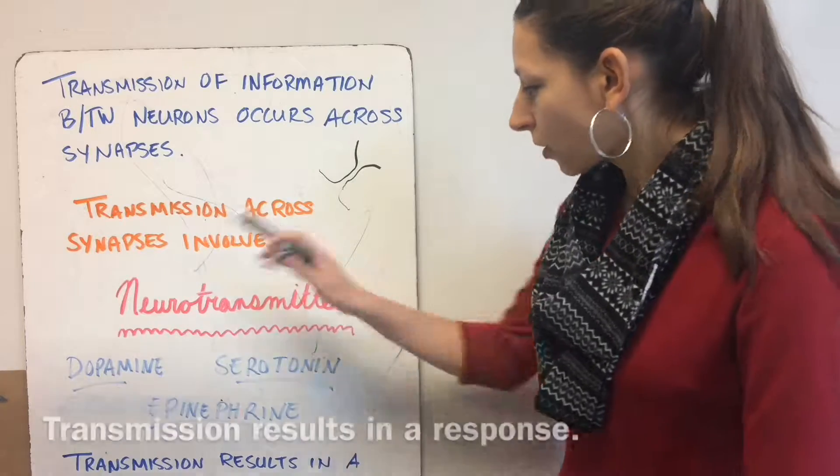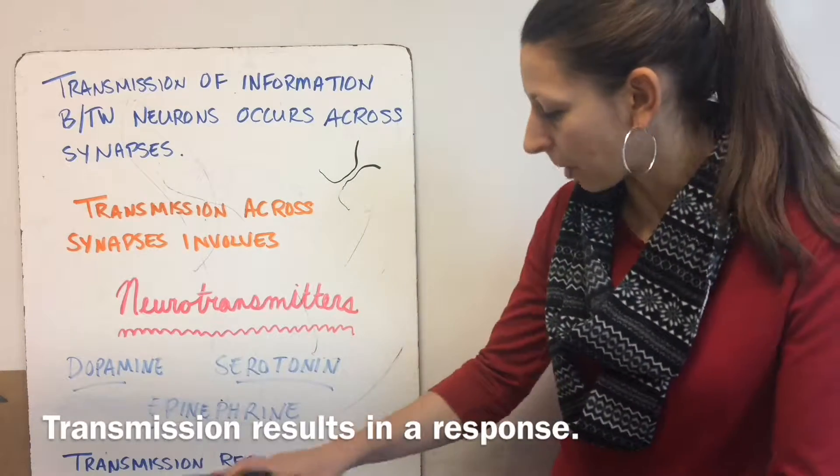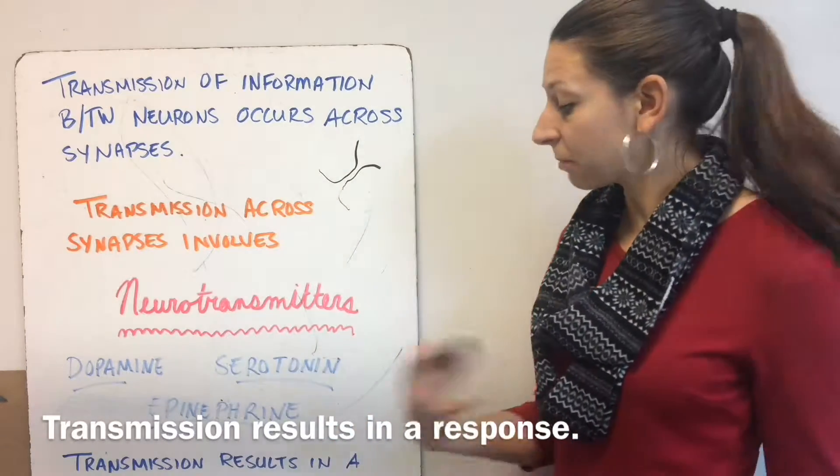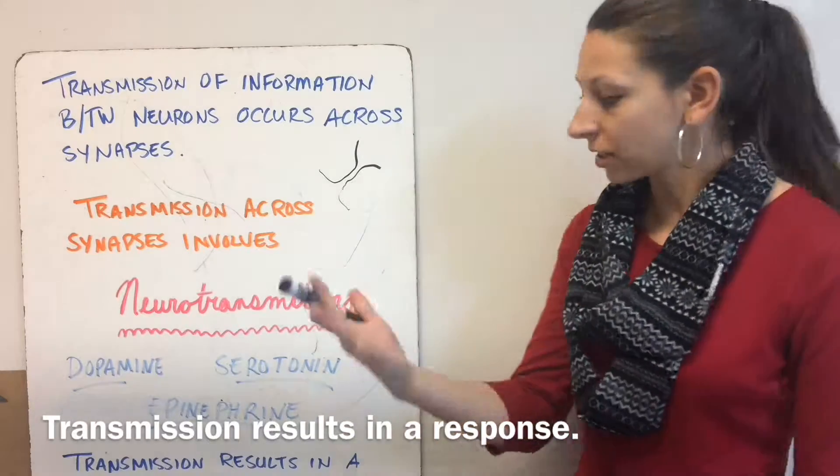The transmission of a neurotransmitter results in a response, either inhibitory or stimulatory. It's either going to stop something or increase something.